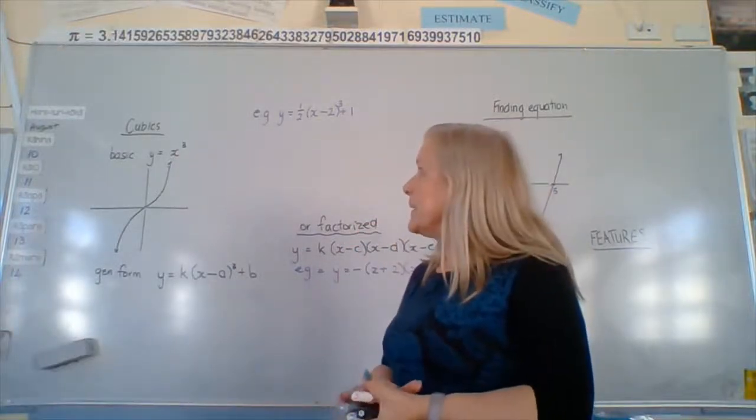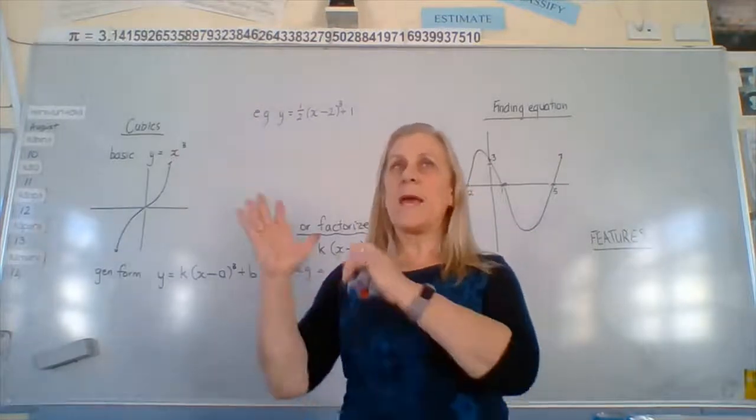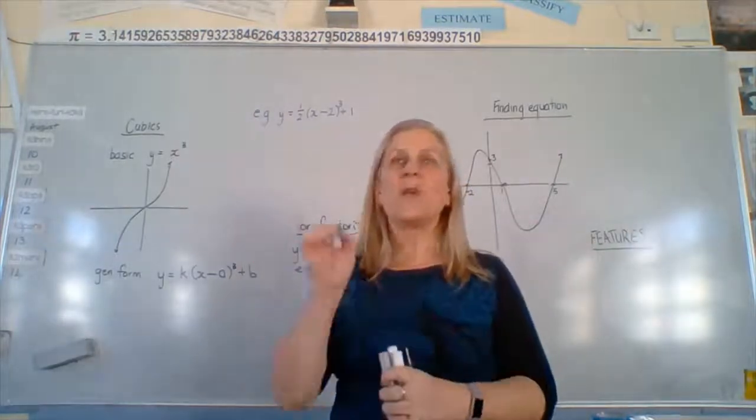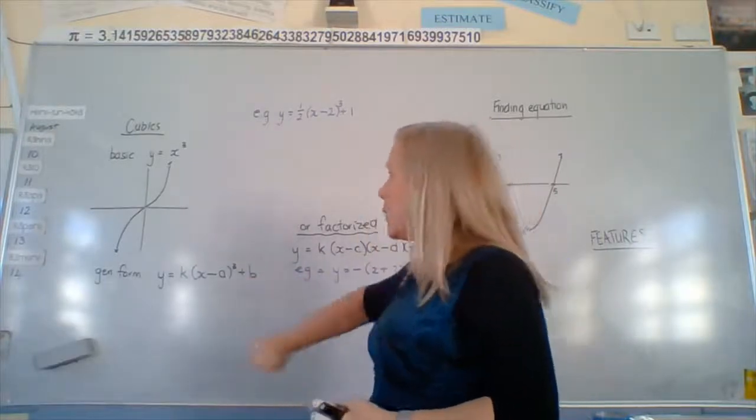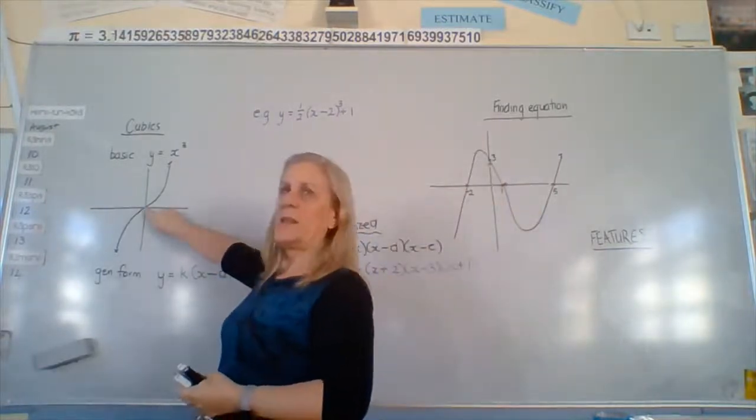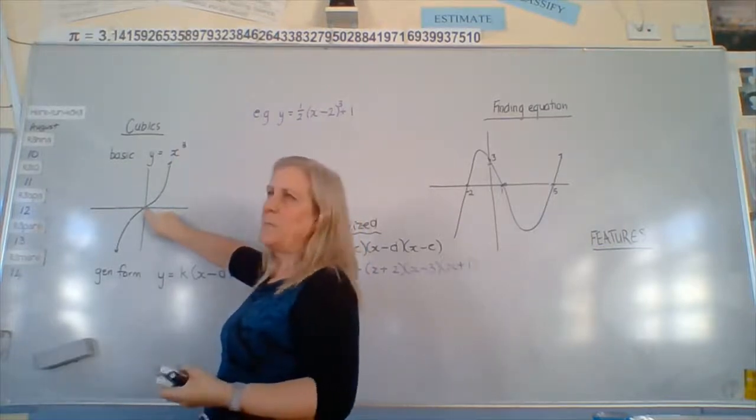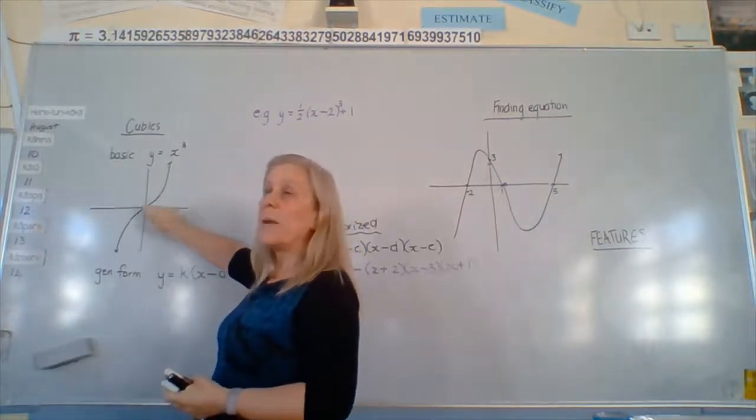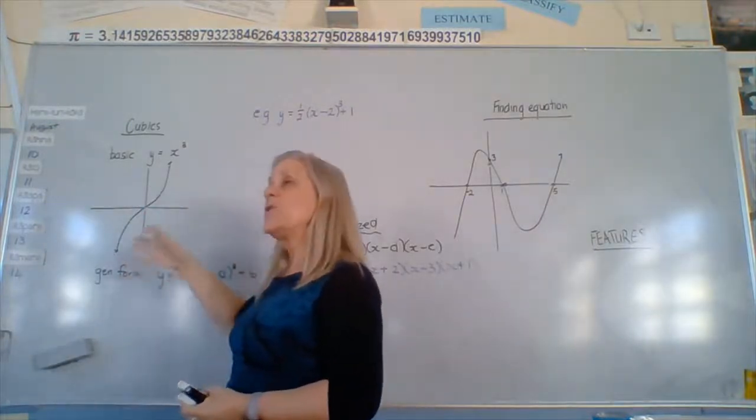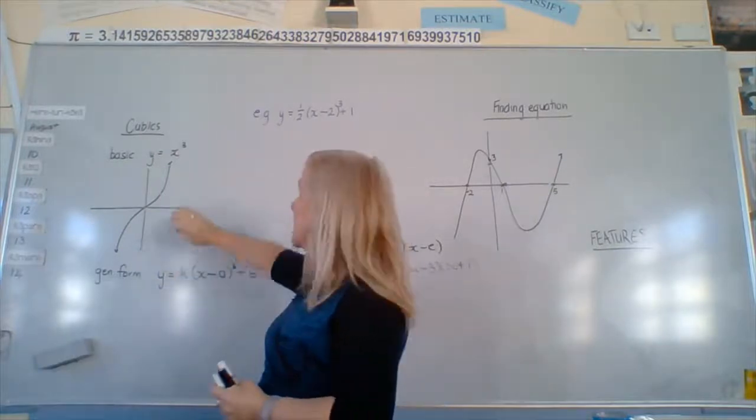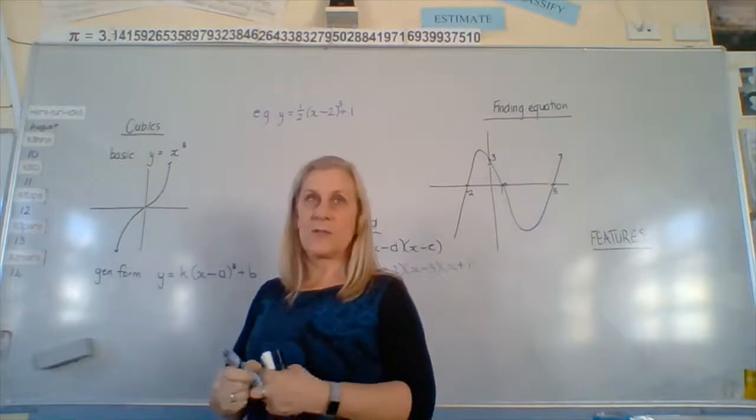Looking at cubics today. They behave the same as all graphs - we can move them around based on one particular point on the graph, and that point can be anywhere. But we're actually dealing with this point right in the middle here. It's the point of inflection, which is a technical name. We'll learn a lot about these graphs when we get to the calculus topic. So what is the pattern around this graph?